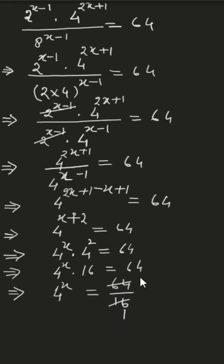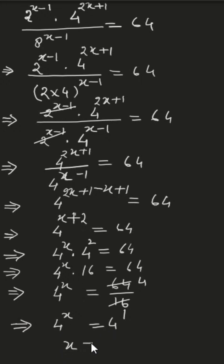So 4 to the power x equals 64 divided by 16, which is 4. Therefore 4 to the power x equals 4 to the power 1, and comparing both sides we get x equals 1. This is the correct answer. Please subscribe to my channel and like the video, thank you.